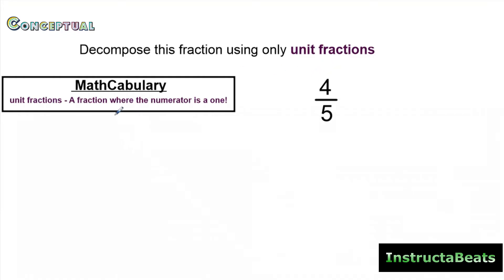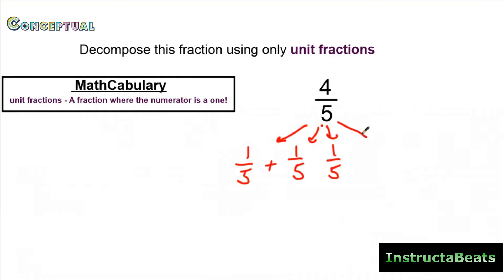A unit fraction is a fraction where the numerator is one — so that would be one-fifth. So how many one-fifths would I need to make up four-fifths? If I'm decomposing this, I'd have one-fifth plus one-fifth — that's two-fifths — plus another one-fifth, that'd be three-fifths, plus another one-fifth, that would be four-fifths. So decomposing four-fifths into unit fractions looks like one-fifth plus one-fifth plus one-fifth plus one-fifth, and when you add those back together, you get four-fifths.